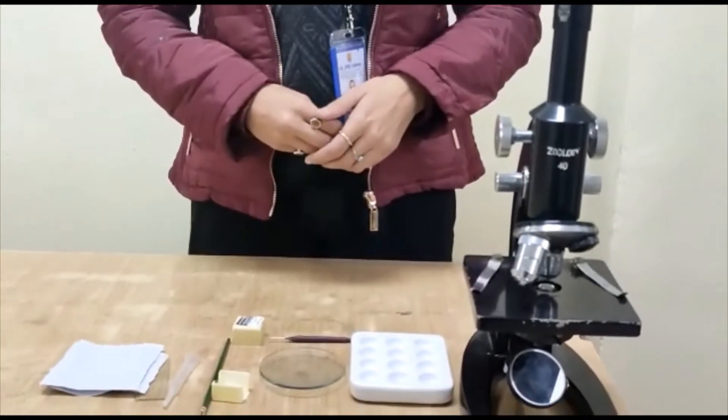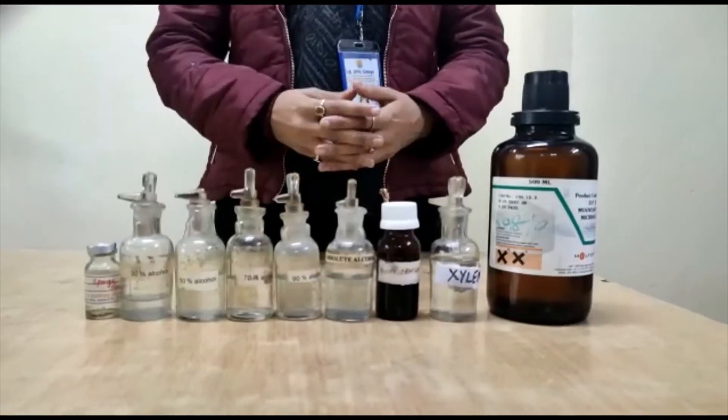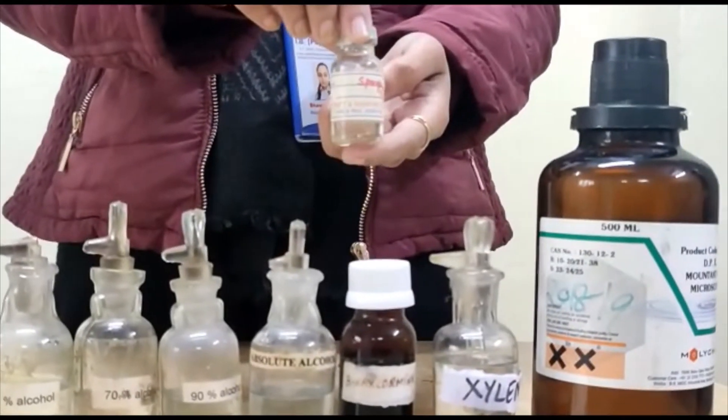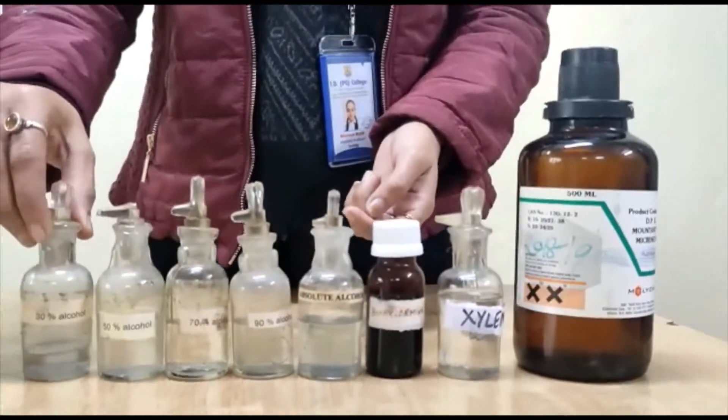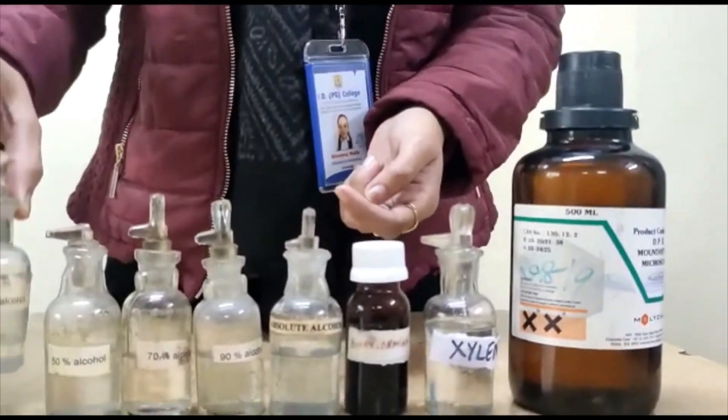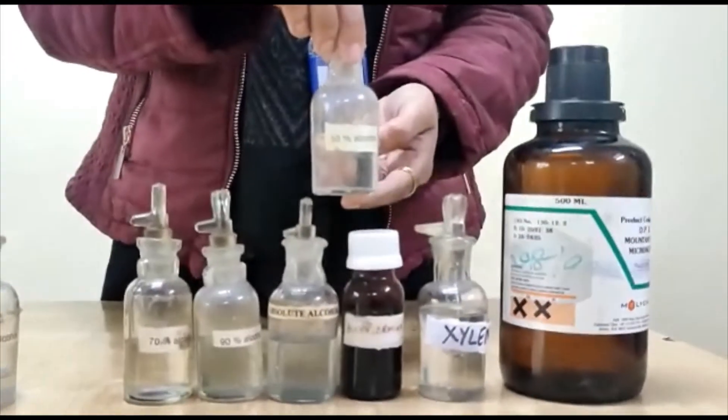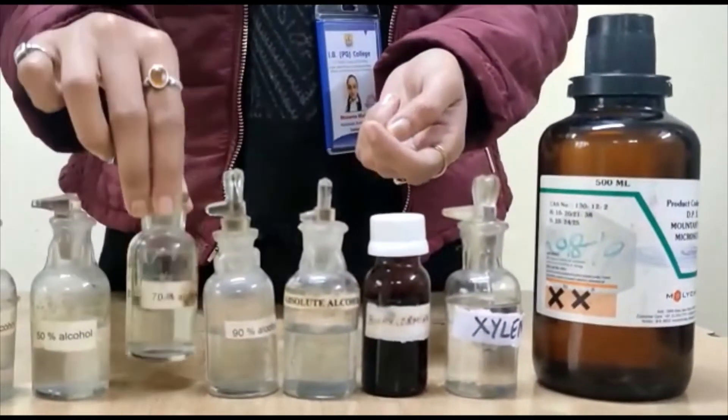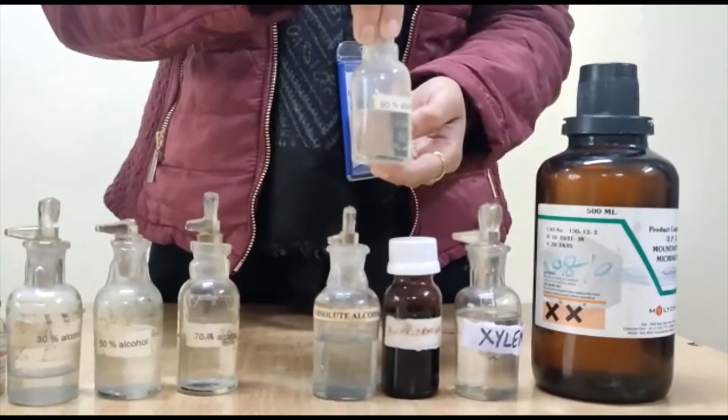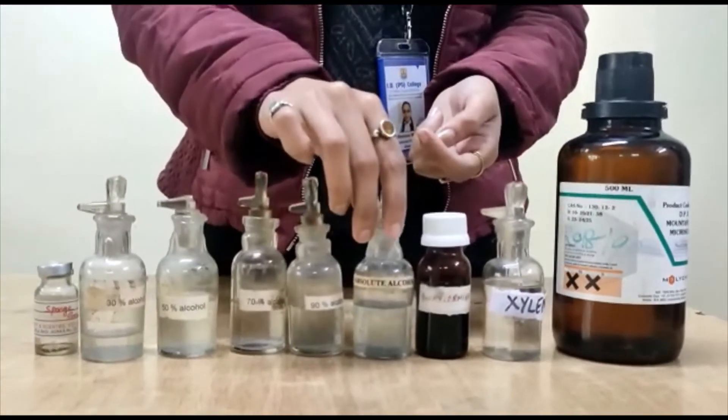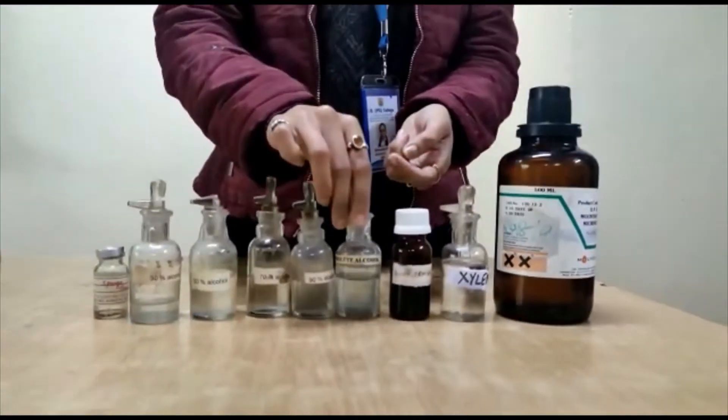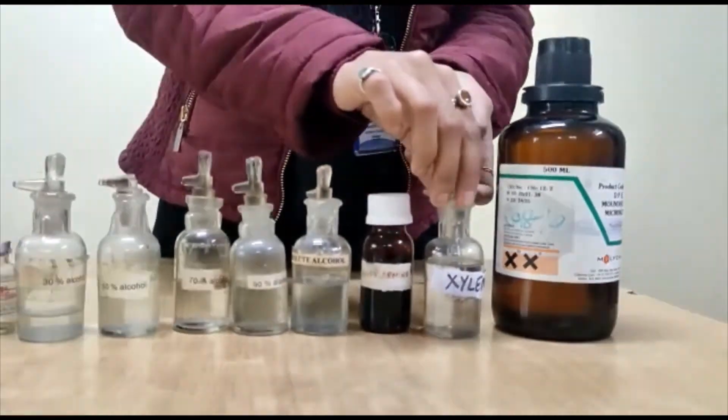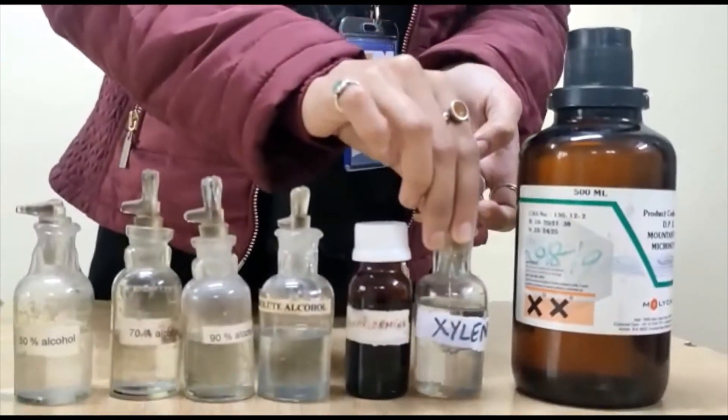Now the chemicals required. Firstly, we need the sample of the gemmules which are found in the sponges and different grades of alcohol. 30% alcohol, 50% alcohol, 70% alcohol, 90% alcohol, 100% or absolute alcohol, the stain borax carmine made in 70% alcohol, xylene, and DPX for mounting.